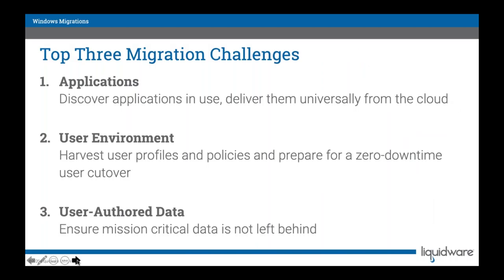The top three migration challenges when moving from platform to platform or OS to OS — whether from VMware Horizon to Microsoft WVD, Citrix on Azure, or Amazon Workspaces — are: making sure users have the applications they need to be productive, making sure their user environment is readily available even if you change the OS, and ensuring user-authored data is always saved with best practices. We encounter many organizations that have never implemented best practices and are still letting users save data to individual hard drives on physical PCs.